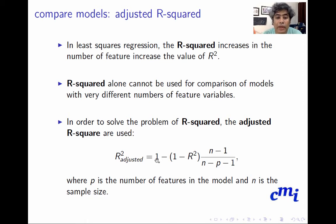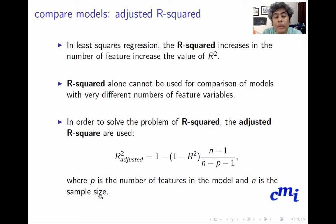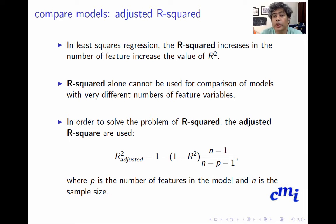To solve that problem, adjusted R-squared is defined as: 1 − (1 − R²) × (n − 1) / (n − p − 1), where p is the number of features and n is the sample size. When doing model comparison, you must use adjusted R-squared instead of simple R-squared — that is my strong suggestion.